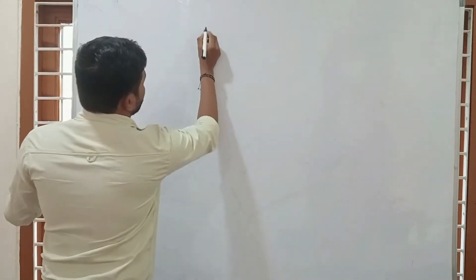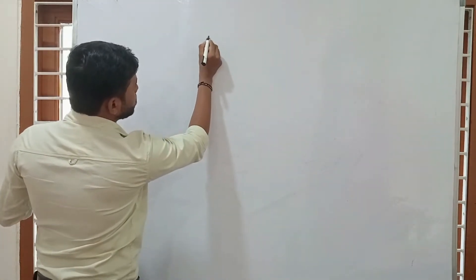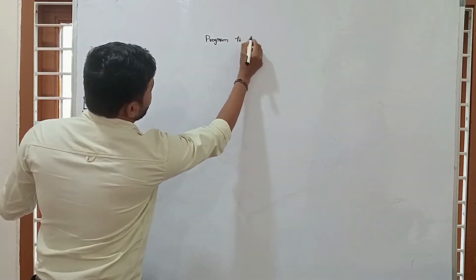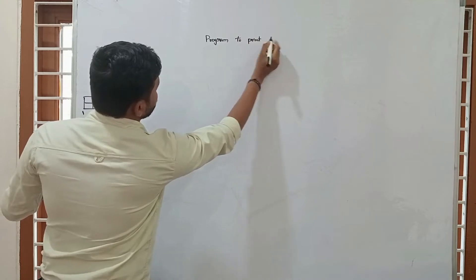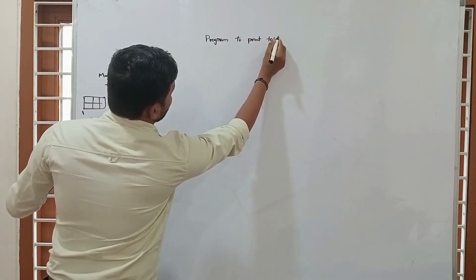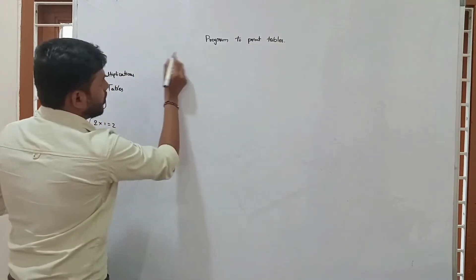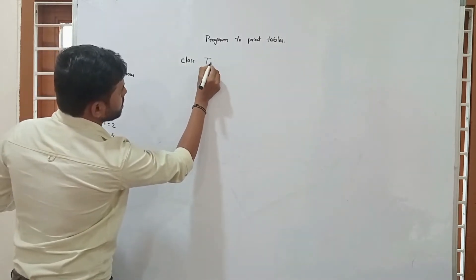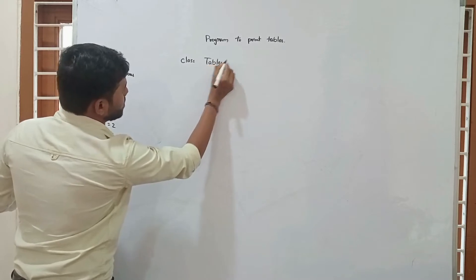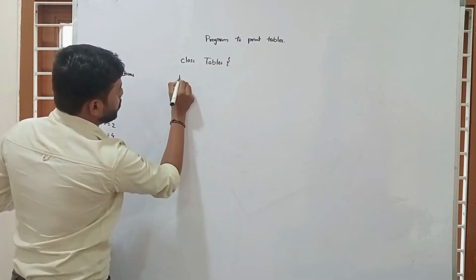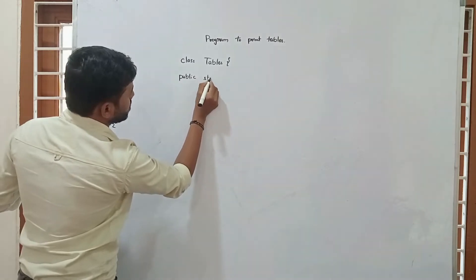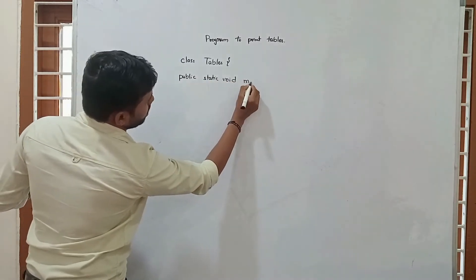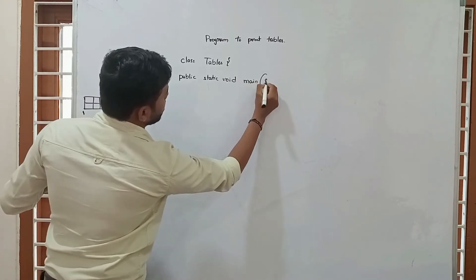Now let's come to the program. The program is to print tables. Here we are going to declare the class — class Tables — and inside we declare public static void main. Here I am declaring the main method.